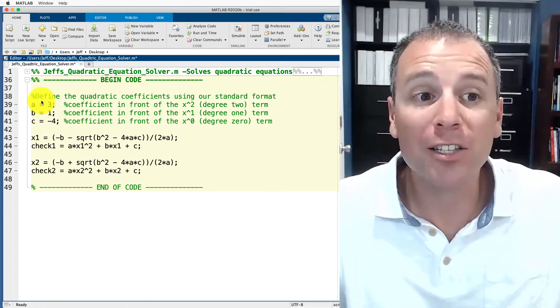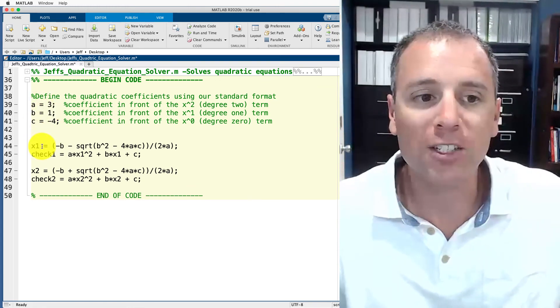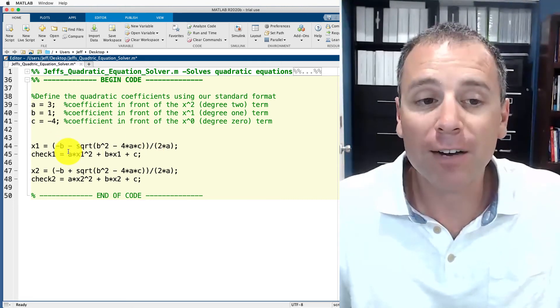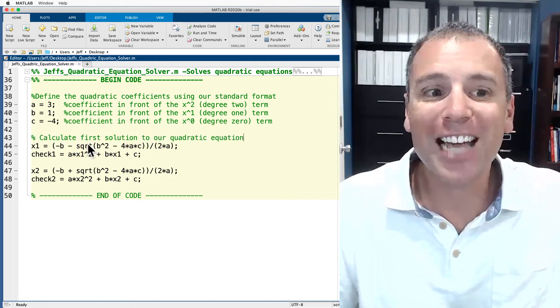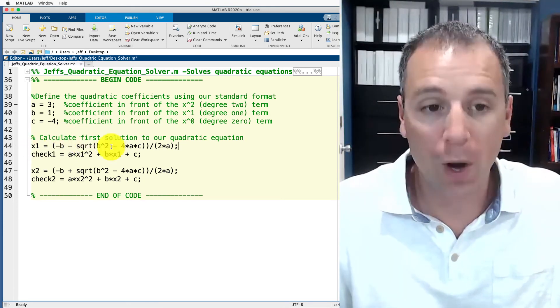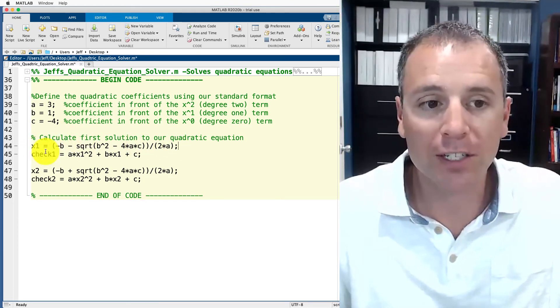After we finish documenting the first few lines of code, let's move on to the next one. x1 equals negative B minus blah, blah, blah. What is this set of code designed to do? Well, it's designed to calculate the first solution to our quadratic equation. Once I identified what this line of code is designed to do, let's move on to the next one.